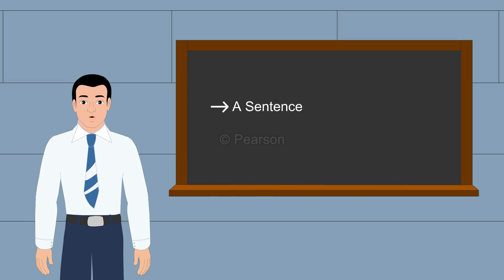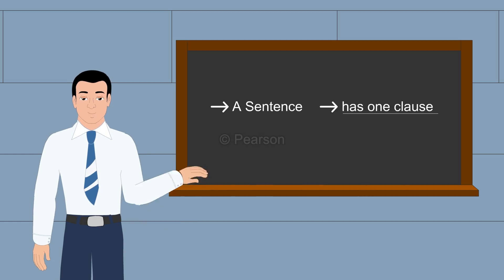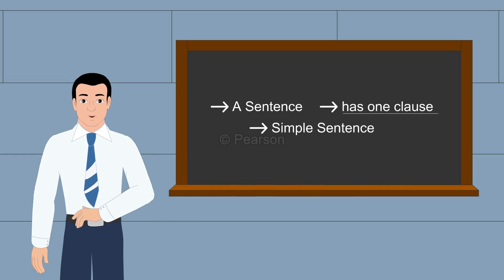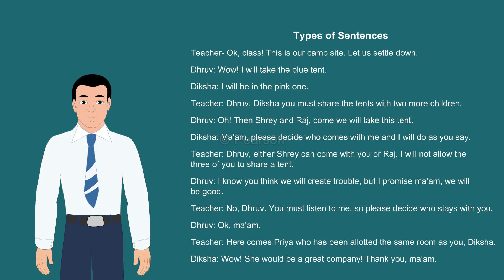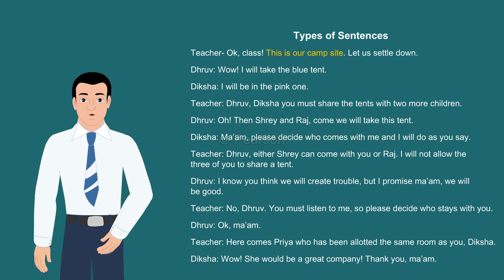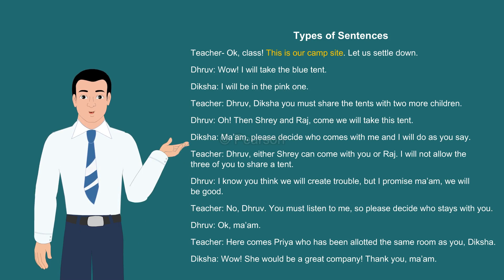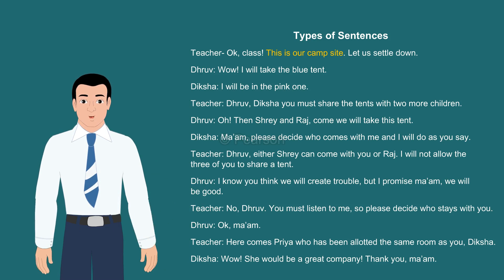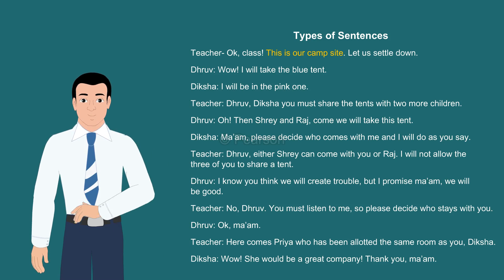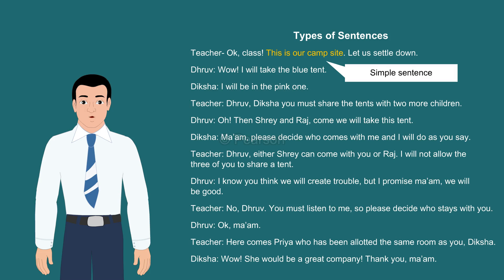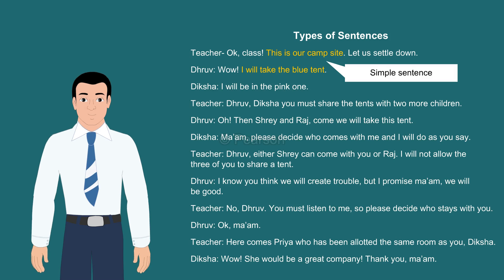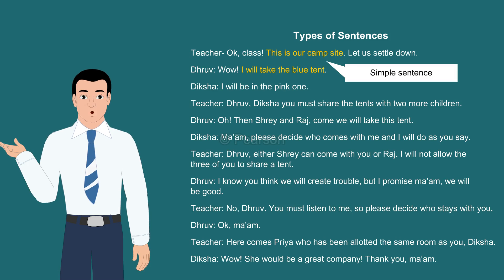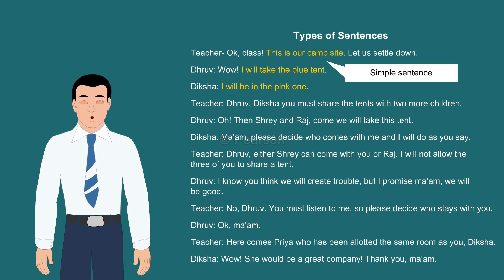A sentence having only one clause is called a simple sentence. The teacher says, 'This is our campsite.' She talks about only one thing, the campsite. So it's a simple sentence. Other examples are: 'I will take the blue tent' and 'I will be in the pink one.'